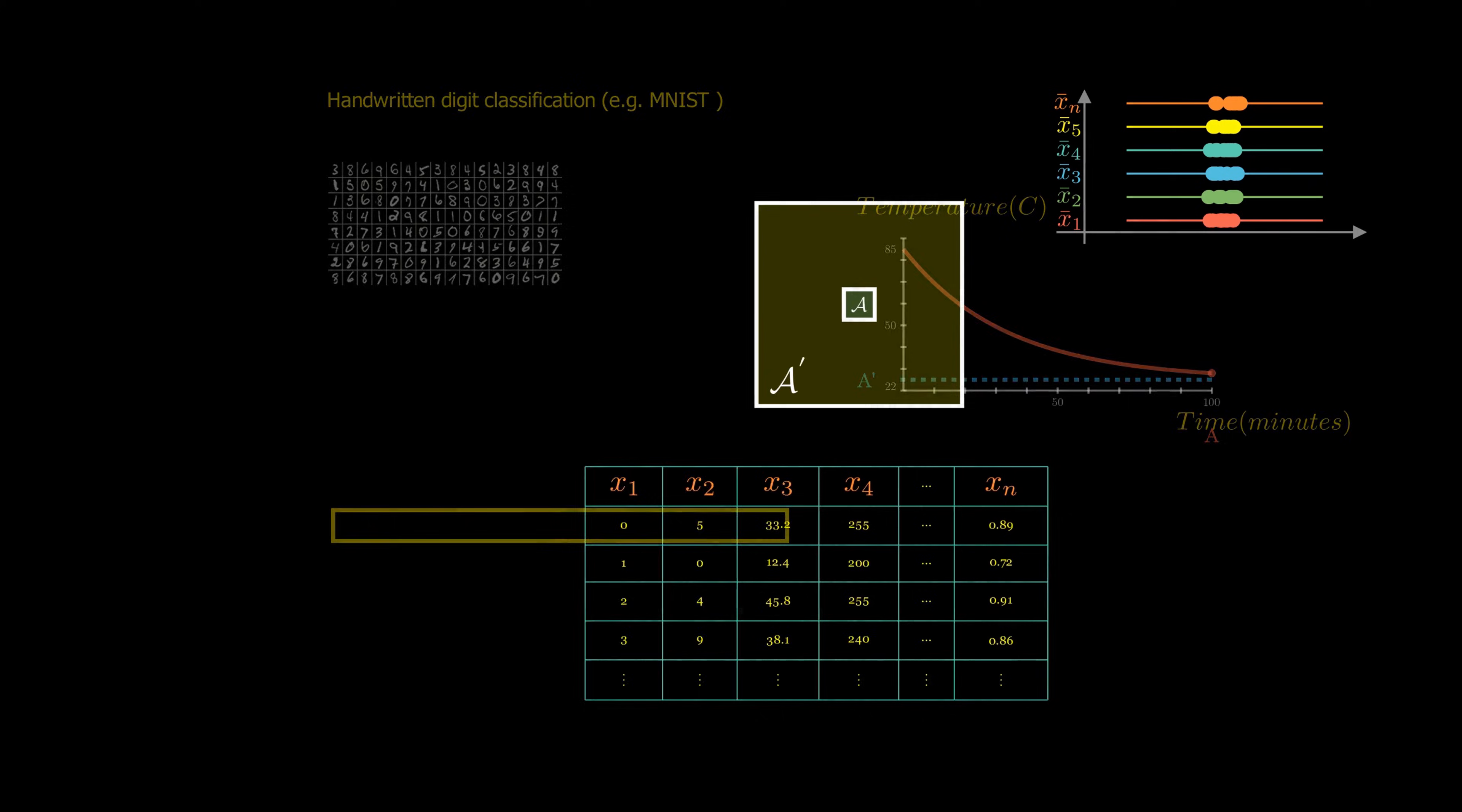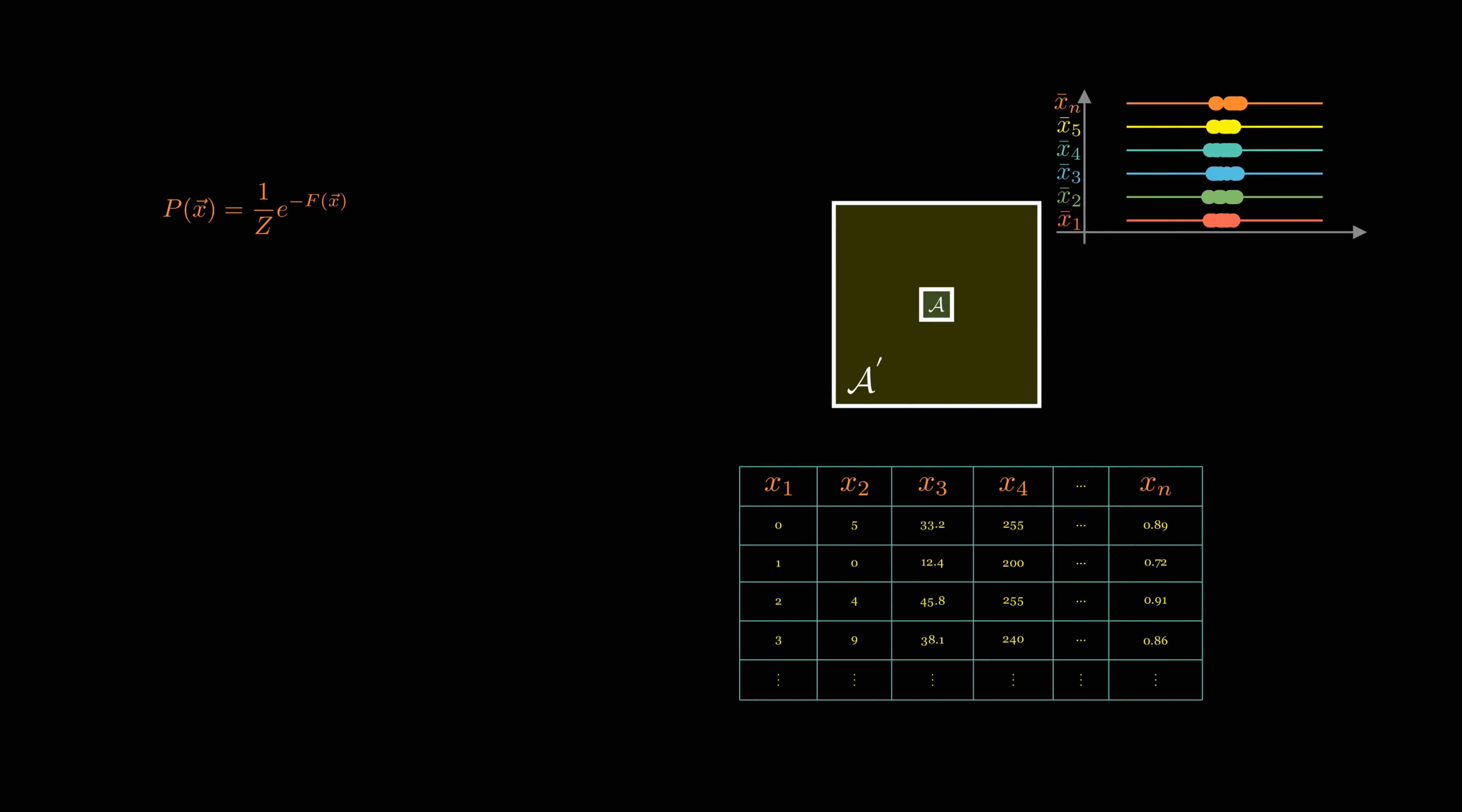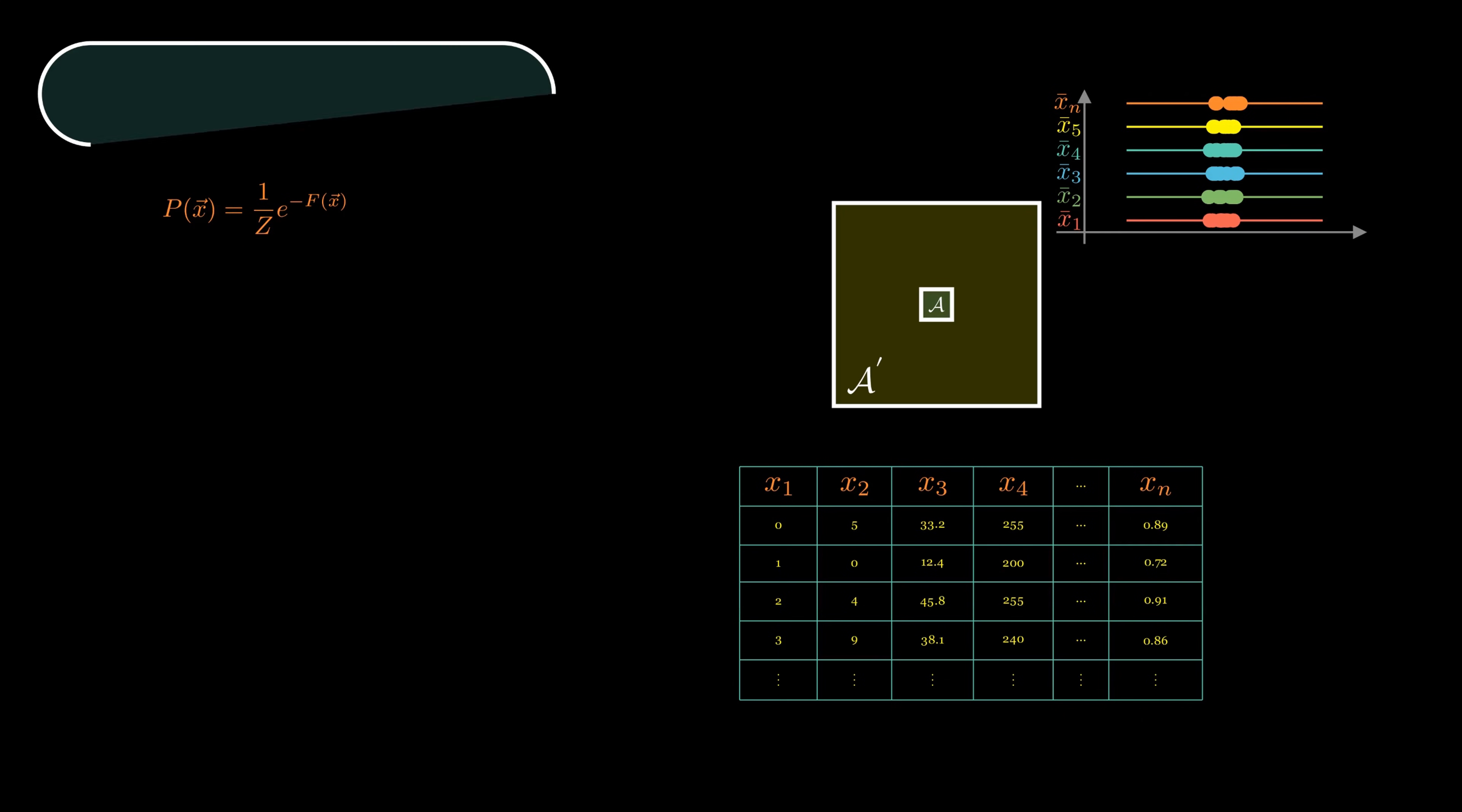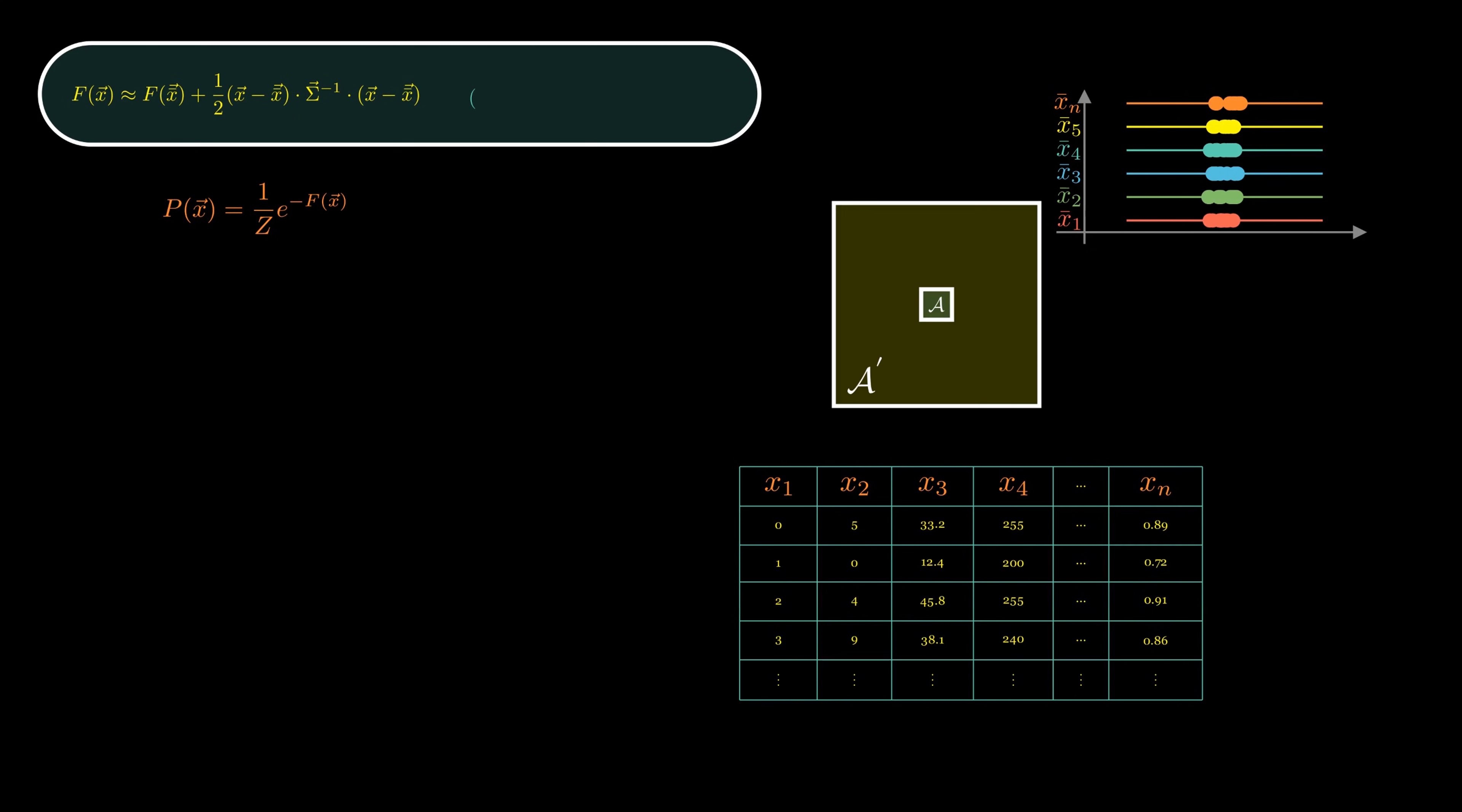The general form of the probability is as follows. Following physics literature, F is a function called the effective free energy, and Z is the normalization constant, often referred to as the partition function. Since the system is fluctuating only slightly around the mean, we can approximate F using a Taylor expansion. Here, sigma is called the covariance matrix of the variables, and its inverse appears as the coefficient of the Taylor expansion. Since the first term is just a constant, we can absorb it into the normalization factor. The final form of the probability is,